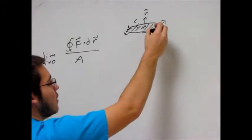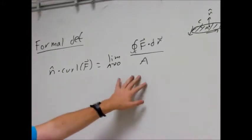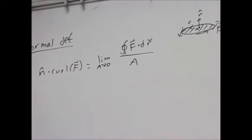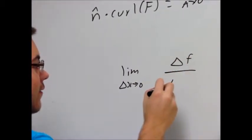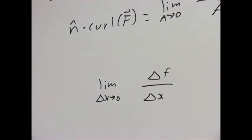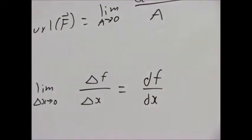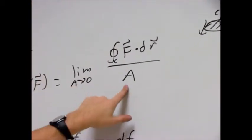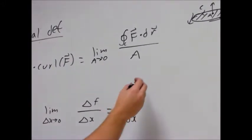So now I want to show you how this is sort of similar to the definition of derivative. Definition of derivative is limit as delta x goes to zero of delta f over delta x. We write it in shorthand form, and this is the derivative with respect to x. So intuitively, this is something divided by A as A goes to zero, so this could be similar to a derivative of sorts.